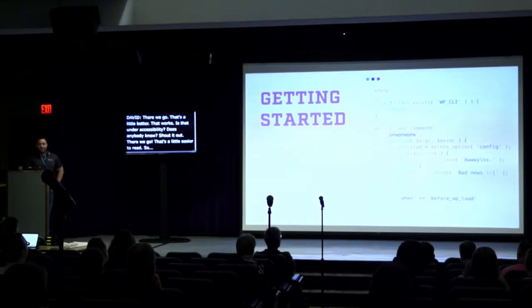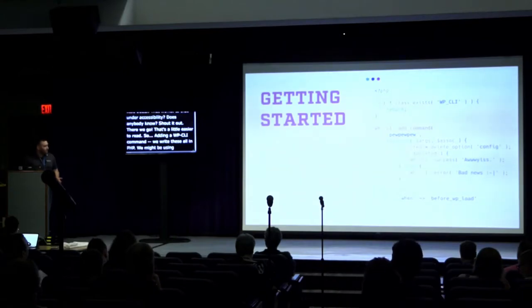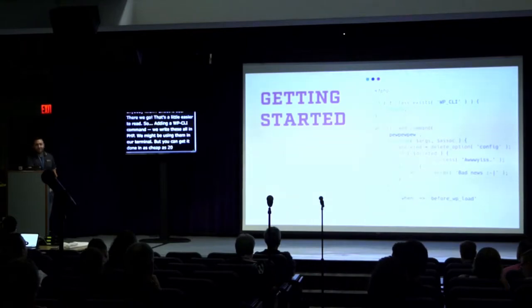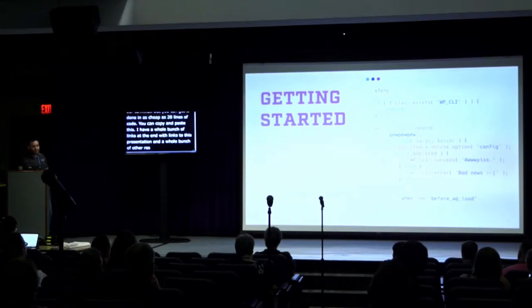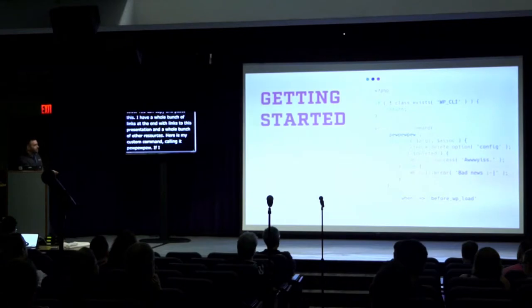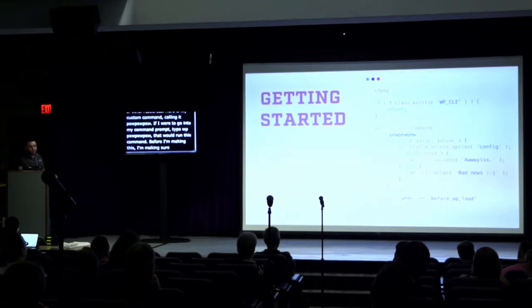Adding a WP-CLI command — we write these all in PHP even though we use them in the terminal. You can get it done in as few as 20 lines of code. Here I have my custom command called "pew pew pew" — so if I went into my command prompt and typed WP pew pew pew, that would run this command. Before using this I'm making sure WP-CLI is available and returning if it isn't so we never reach that line — because if you don't do that, you'll see some really unfriendly fatal errors in your command prompt.